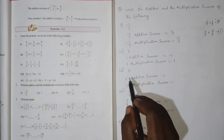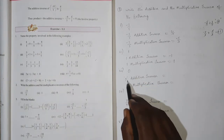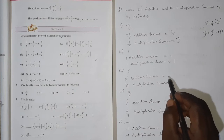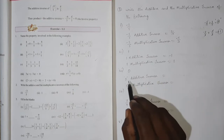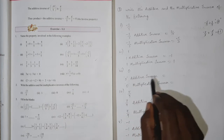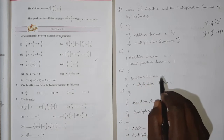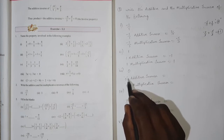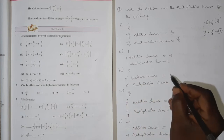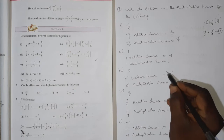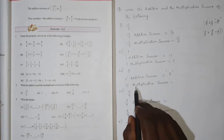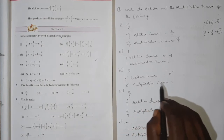Next one: zero. What is the additive inverse of zero? For any number, when we add its additive inverse we get zero. So zero plus zero equals zero — friends, the additive inverse of zero is zero itself.